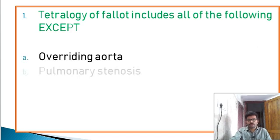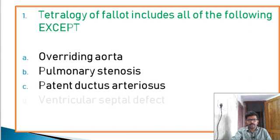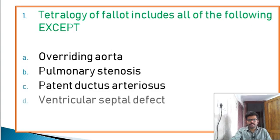Tetralogy of Fallot includes all of the following except — options: overriding aorta, pulmonary stenosis, patent ductus arteriosus, ventricular septal defect.